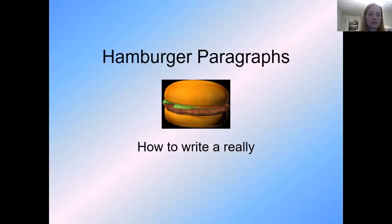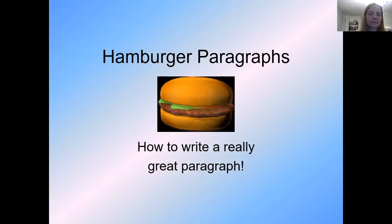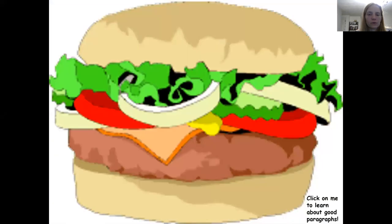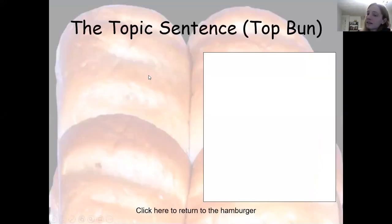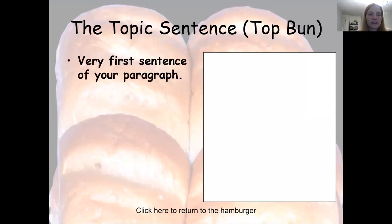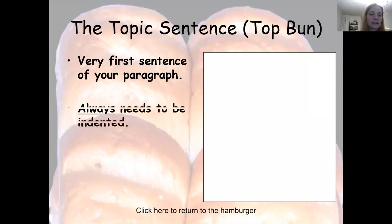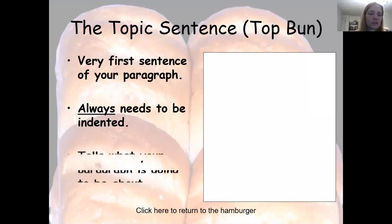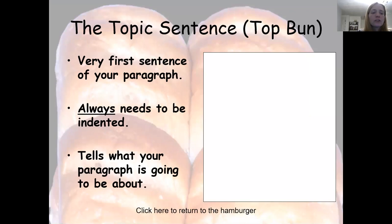So we have hamburger paragraphs — how to write a really great paragraph. And you can do this for anything. Basically, what we have is the top bun. The topic sentence is our top bun. It's the very first sentence of your paragraph — usually it's the thesis statement, the main idea. This always needs to be indented when you're typing, so just hit your tab button one time. It looks more professional. And thirdly, it tells what your paragraph is going to be about — what is your argument, what is your reason, the 'why should we care' portion. So your thesis statement is like the roadmap to your essay, and in this case it's your topic sentence. It's the first sentence of your paragraph and it tells us why we should care, why we should want to read on.